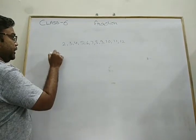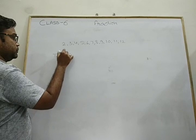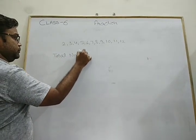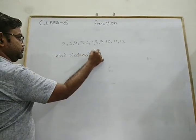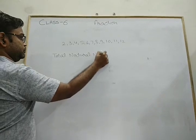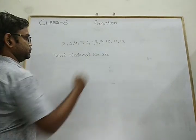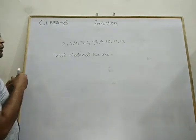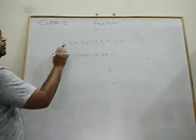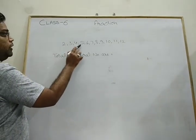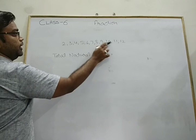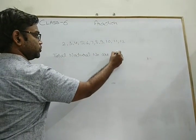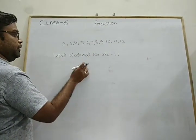So the total natural numbers are 11 — when we count them: 1, 2, 3, 4, 5, 6, 7, 8, 9, 10, 11. Total natural numbers equal 11.